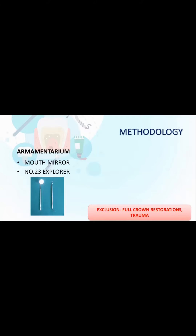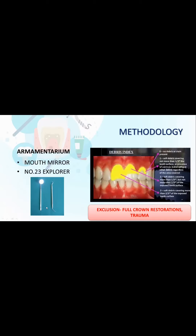The armamentarium required is a mouth mirror and a number 23 explorer, also called the shepherd's hook explorer, as seen in the slide. This index has two components: the Debris Index (DI-S) and the Calculus Index (CI-S). Debris scoring is 0 to 3: score 0 for no debris; score 1 if debris covers up to one-third of the surface, or if any extrinsic stain is present regardless of debris amount; score 2 if between one-third and two-thirds; score 3 if more than two-thirds.